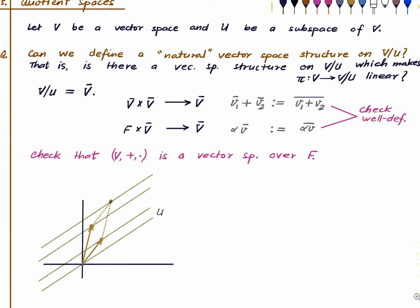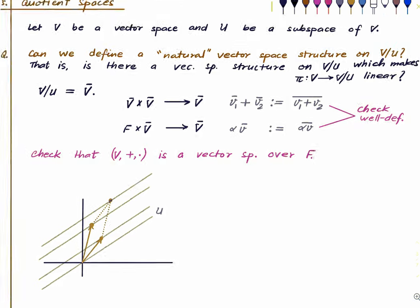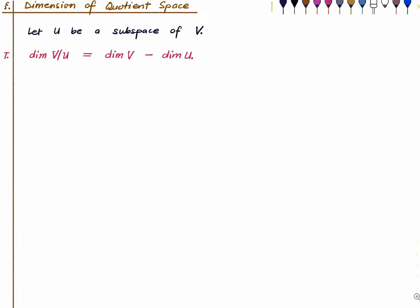That is the definition of quotient space. Given a subspace, you can always form a quotient space — a nice example of new vector spaces arising out of old. Now we have defined quotient spaces. A natural question arises: if U is a subspace of V, and V is finite-dimensional, what is the dimension of the quotient space? The answer is very simple: it is just the difference of the dimensions of the two spaces.